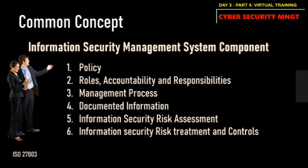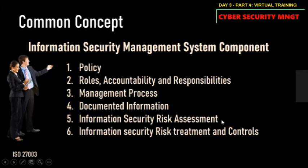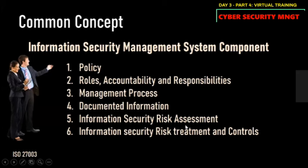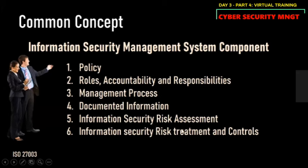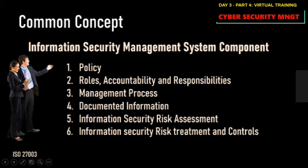Number five is information security risk assessment. By having documented information, we can continuously reassess risks that may come in the near future. As more crimes are created and more sources of attacks emerge, we must continuously reassess the risks to our assets. And if we continually conduct risk assessments, we continue to update our risk treatment and controls — modifying controls depending on the risks assessed, because possible risks are always being created.